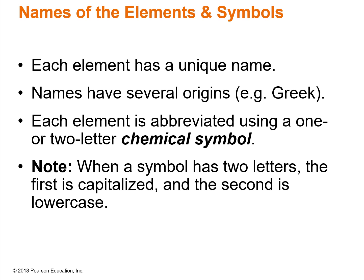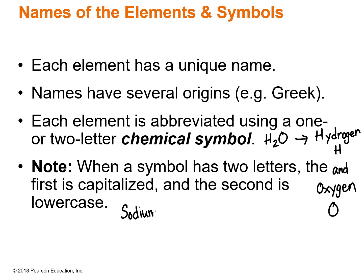All of these elements have a unique name with different origins — Greek, Latin, or named after people who helped discover them. Each element has an abbreviation of one or two letters called a chemical symbol. For example, hydrogen is H and oxygen is O. When a symbol has two letters, only the first letter is capitalized — like sodium, which is Na (capital N, lowercase a). That's an example of a two-letter symbol.